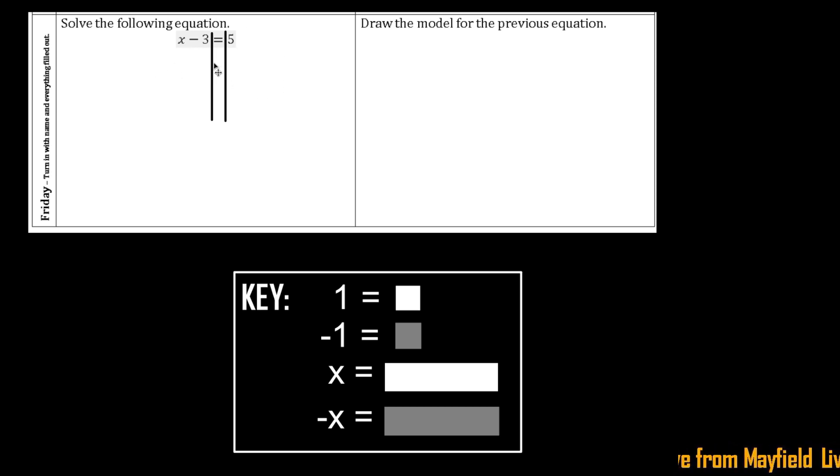You want to always do the inverse operations. Since it has a negative 3 or minus 3, you want to make sure you do the opposite. So we add the opposite. We're going to add a positive 3 to both sides. Again, whatever you do to one side you have to do to the other, otherwise it becomes unbalanced.